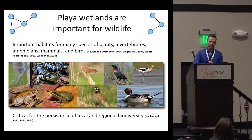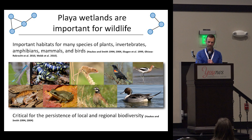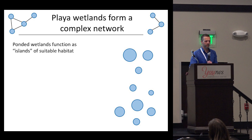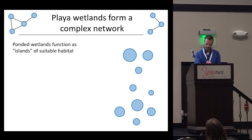Wetlands are very important for wildlife. They provide critical habitat for all kinds of species — plants, vertebrates, amphibians, mammals, and birds. Here are some photos, though you saw video footage of a lot more species that you can find in these habitats. Together, I like to think about them as forming a complex network, where these dispersed wetlands function as islands of suitable habitat in a matrix of not-so-suitable habitat.